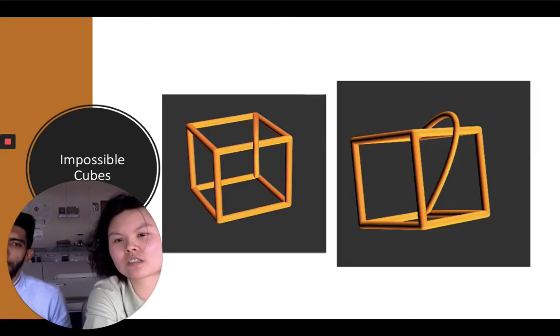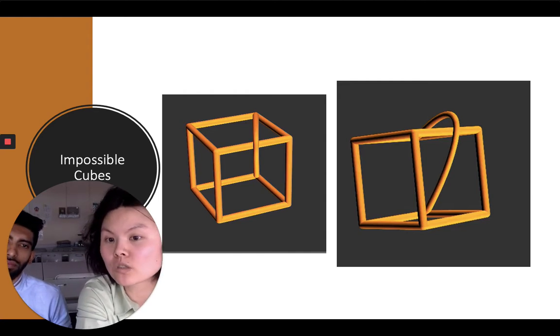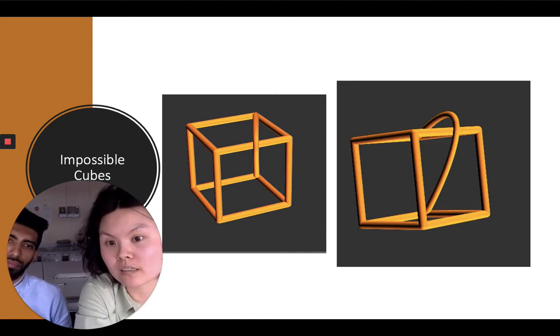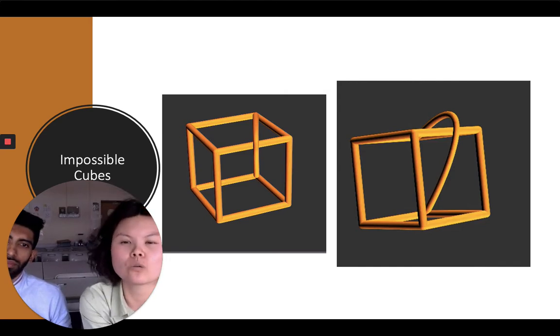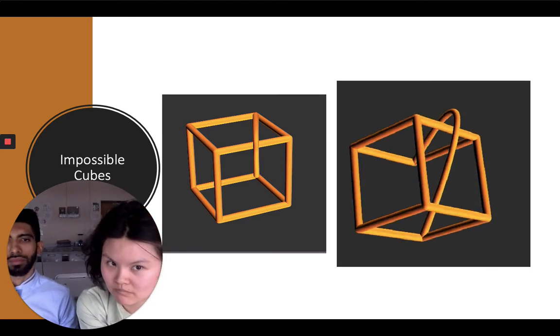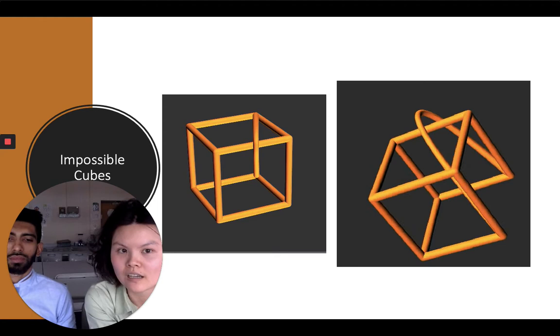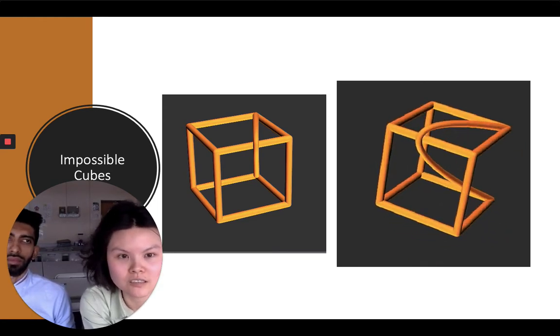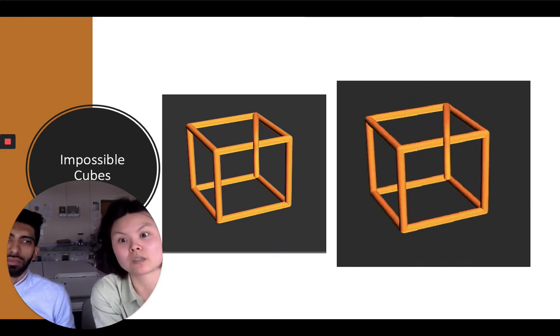But maths isn't just about solving impossible problems, it's also about making impossible things possible. For example, this cube right here doesn't quite work, but with a quick rotation, you can see how this optical illusion has been mathematically constructed to trick you into thinking something like this could exist.